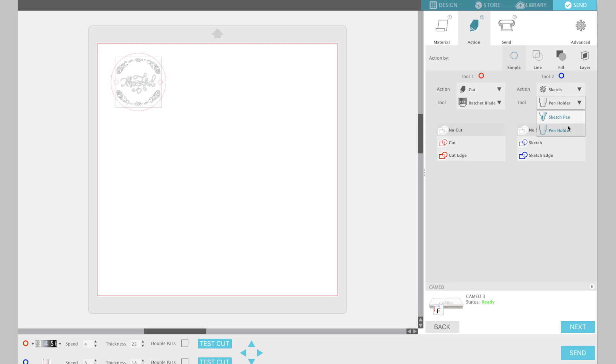So I'm going to switch it to sketch and then you can choose either sketch pen or pen holder. I'm using the pen holder and then click on sketch and those lines will turn blue, so I know that they're being executed by the blue tool.